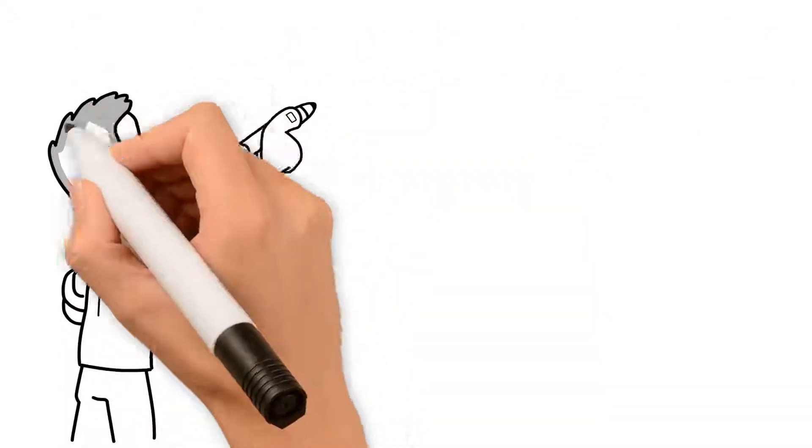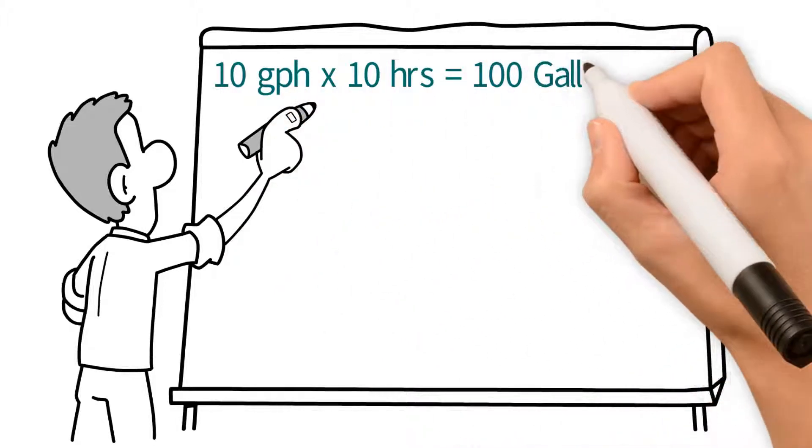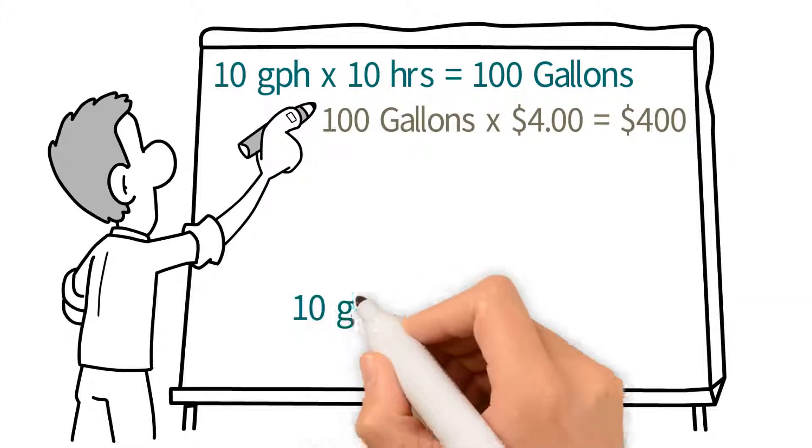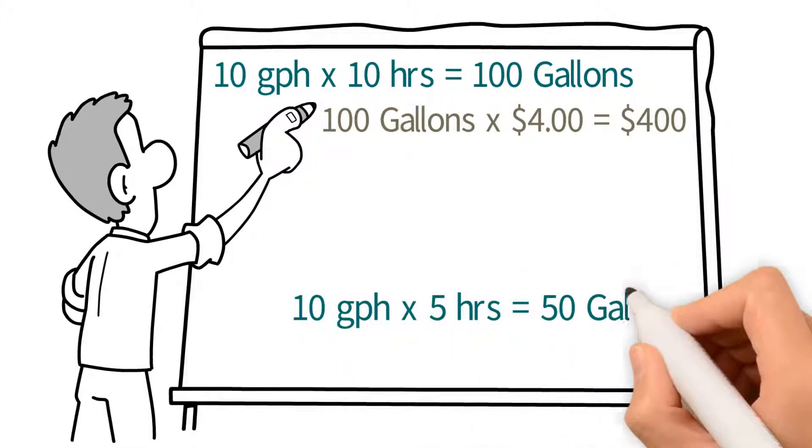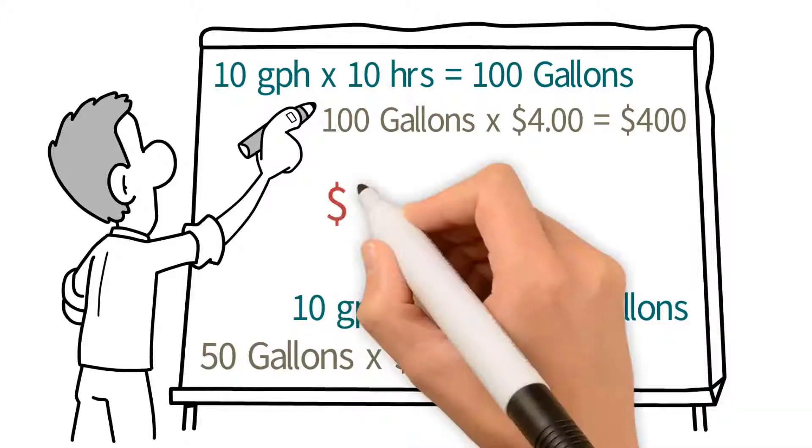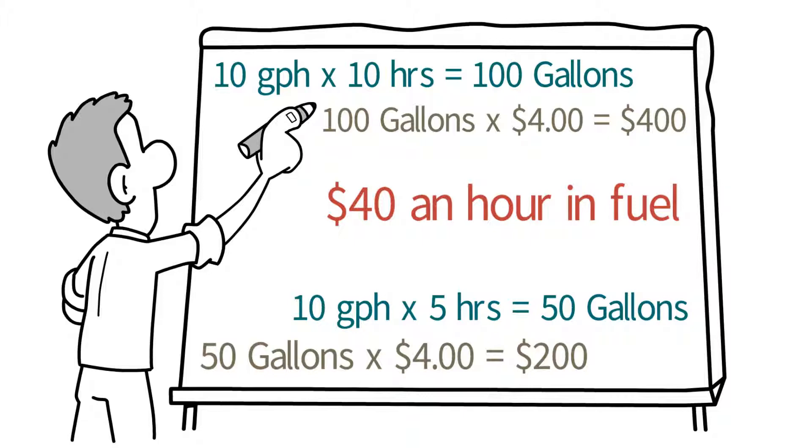If the airplane uses 10 gallons of fuel per hour and it flies for 10 hours, it will need 100 gallons of fuel. If each gallon costs $4, it will cost the school $400. If the airplane flies 5 hours, it will cost $200. Therefore, the airplane costs the school $40 an hour in fuel.